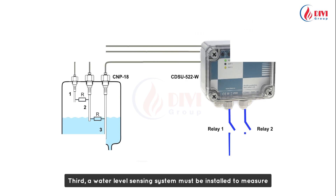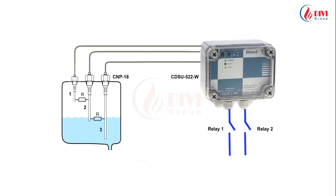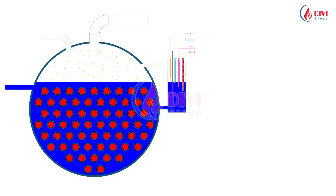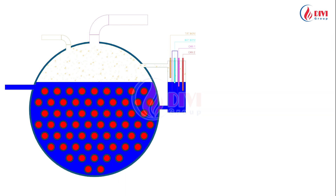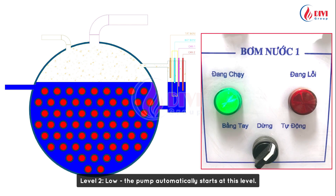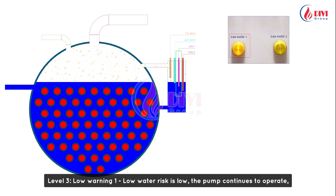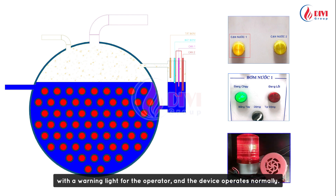Third, a water level sensing system must be installed to measure and warn about the boiler's water level. Water level sensors can be probe-based, with additional float-type sensors installed. Water level sensors are divided into four warning levels: Level 1 (full) — the pump automatically stops; Level 2 (low) — the pump automatically starts; Level 3 (low warning 1) — low water risk is low, the pump continues to operate with a warning light for the operator and the device operates normally.